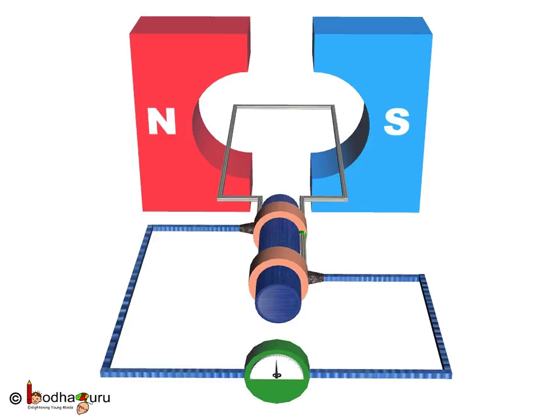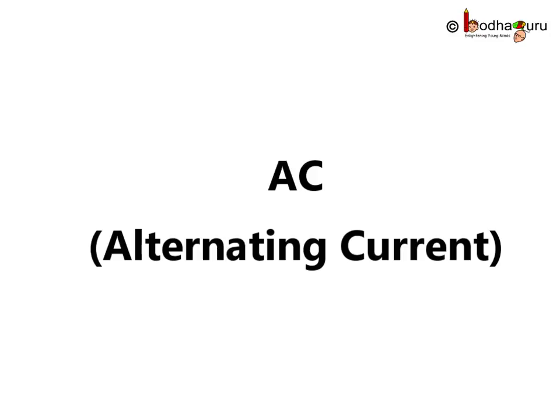Hello everyone, now we know how an AC generator works. It works based on the principle of electromagnetic induction and produces alternating current, i.e., the electrical current that periodically reverses direction.